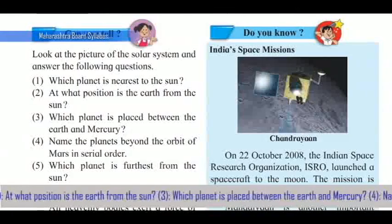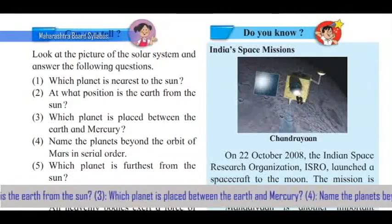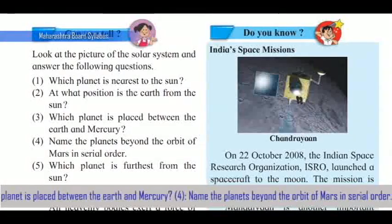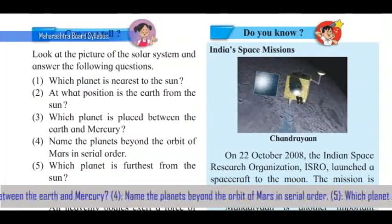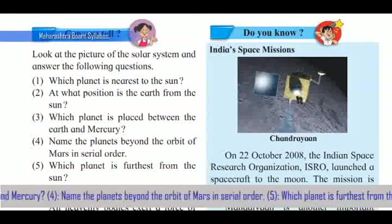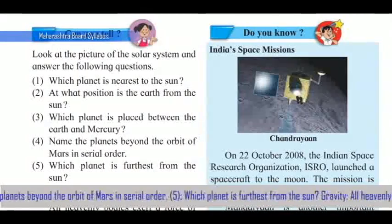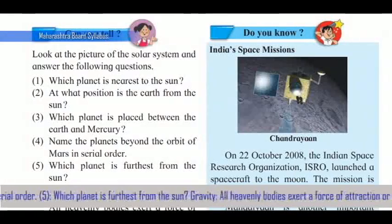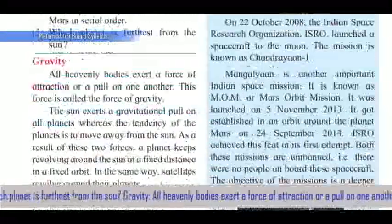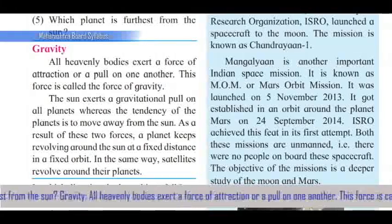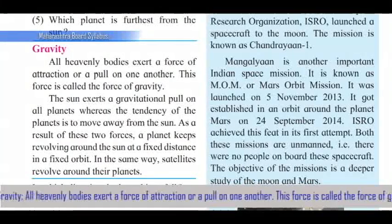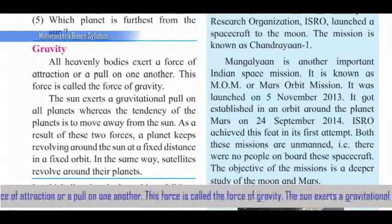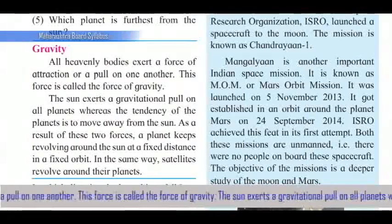Look at the picture of the solar system and answer the following questions: Which planet is nearest to the Sun? At what position is the Earth from the Sun? Which planet is placed between the Earth and Mercury? Name the planets beyond the orbit of Mars in serial order. Which planet is furthest from the Sun?